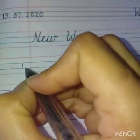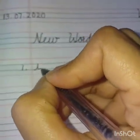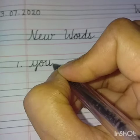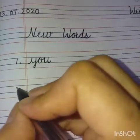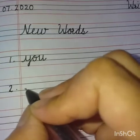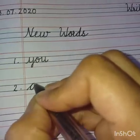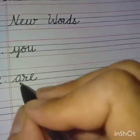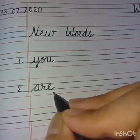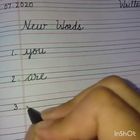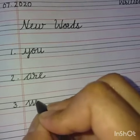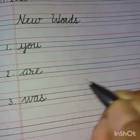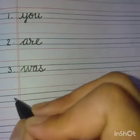Number 1. Y-O-U, you. Number 2. A-R-E, are. Number 3. W, make a small tail. A-S, was.